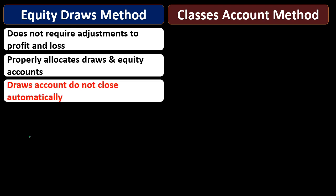The problem with draws accounts is that they do not close automatically. QuickBooks doesn't do the closing process as it does with the profit and loss, which closes out to the equity section. The draws just keep going on forever like other permanent accounts, and that could cause some problems when we go from year to year. We have to be mindful of it when processing reports at year-end so we only include one time period's worth of data.